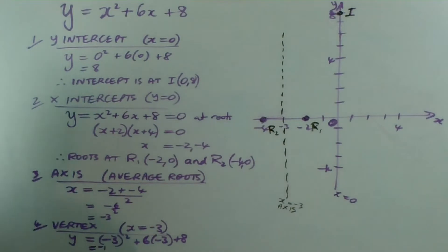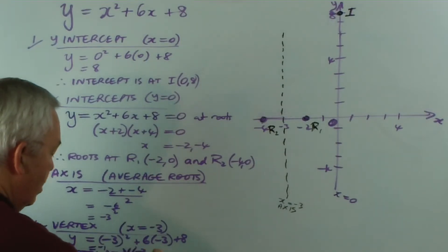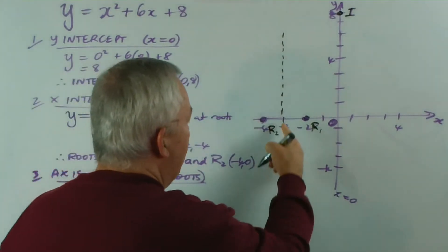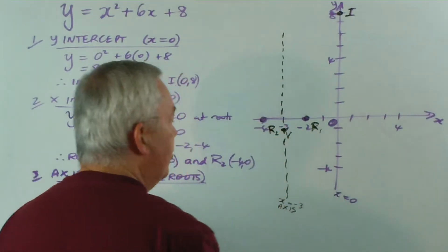And I hope this fits on your screen, but my conclusion is, therefore, there's a vertex at the point minus three, minus one, and if I locate that here—minus three, minus one is here—and I put a capital V for the vertex.